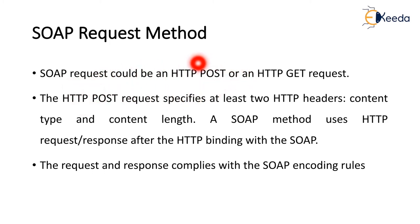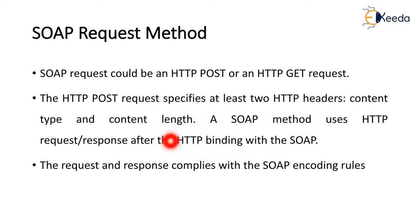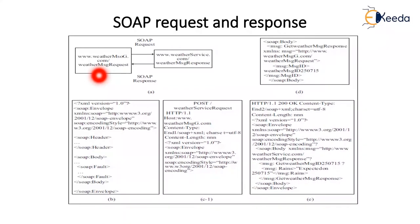A SOAP request could be an HTTP POST or HTTP GET request. HTTP POST requires specifying at least two HTTP headers: content type and content length. SOAP method uses the HTTP request-response model after the HTTP binding with SOAP. Here the client is connected to the server; the client-side SOAP protocol uses the request-response method and HTTP protocol through a web server, which in turn connects to the remote server and also the portal server. The request-response complies with the SOAP encoding rules.